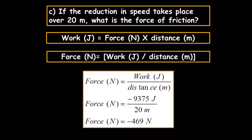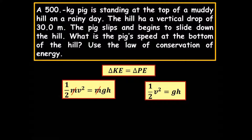In part C of that same problem, we're given the distance over which the floor acts on the block: 20 meters. We know that work equals force times distance. Solving for force, divide both sides by distance, so force equals work divided by distance. Filling in the equation: negative 9,375 divided by 20 equals negative 469 Newtons. That should make sense intuitively because friction is going to be a negative force, as it is contrary to the motion.